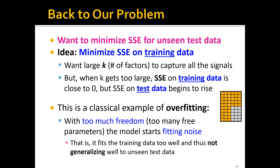Therefore we want a large k, where k is the number of factors, to capture all the signals. But the problem is that when k gets too large, although the SSE on the training data may be very close to zero, the SSE on the test data can begin to rise by a lot. This is a classical example of overfitting.